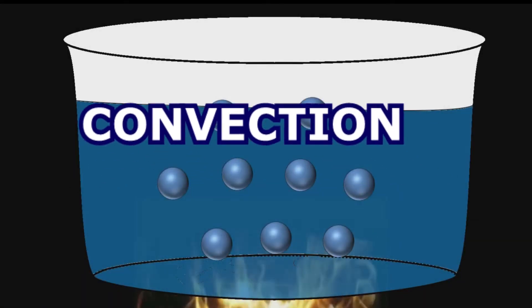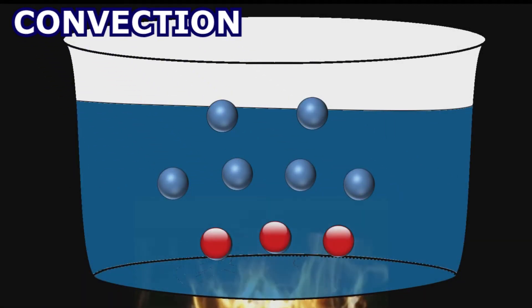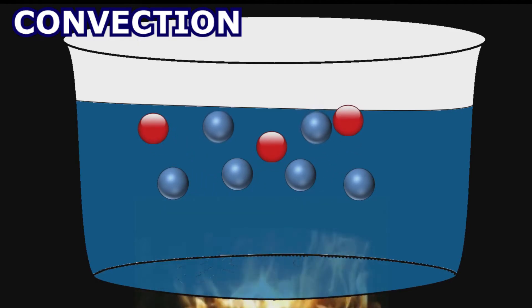Convection is the circular movement that happens when warmer particles in a fluid, which are less dense, rise, while cooler particles, which are denser, drop. This can be applied to liquids and gases.